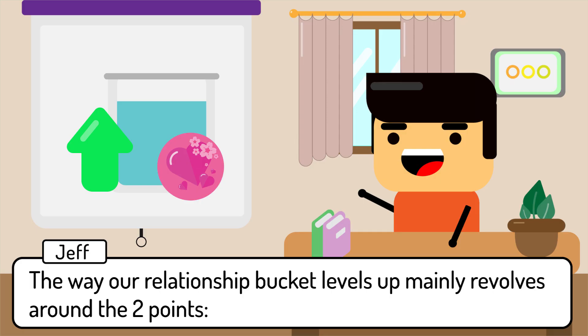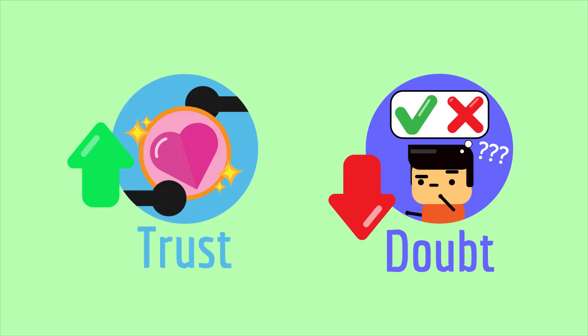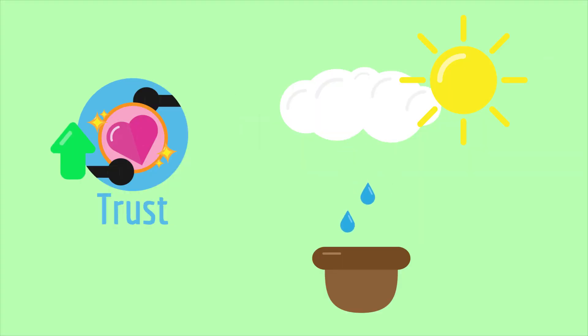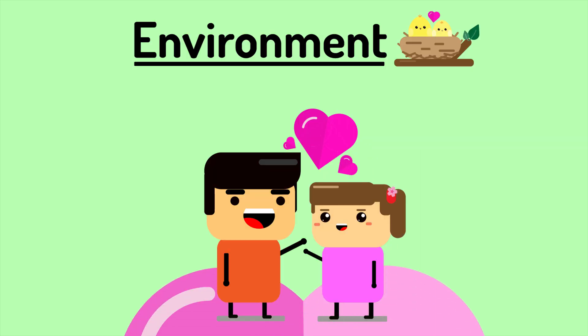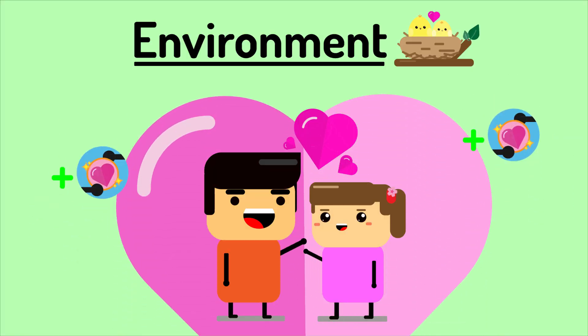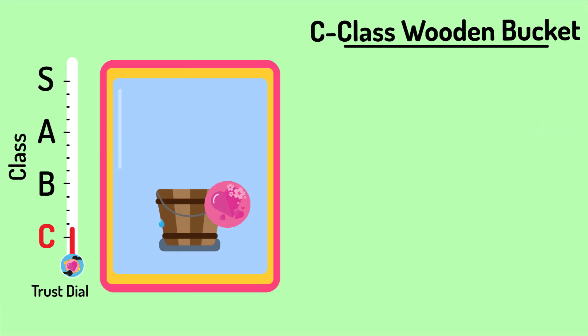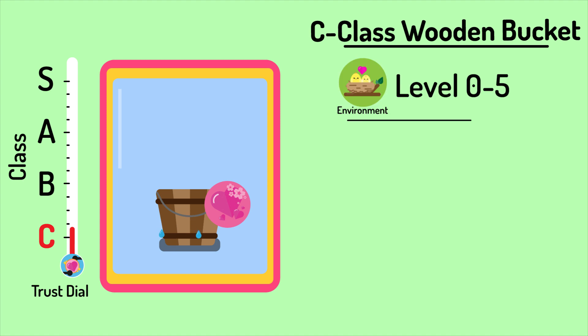Environment Building. The way our relationship security buckets level up mainly revolves around two points: raising trust and eliminating doubt. Trust is built through understanding each other and knowing that you're safe around each other. It takes time to nurture and grow, and to do this, we need to create the correct environment for the bucket to prosper. Using different class buckets to demonstrate different environments, the C-class bucket represents a low-level environment.